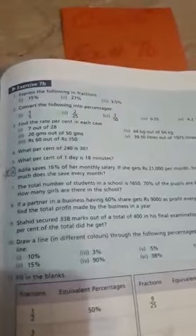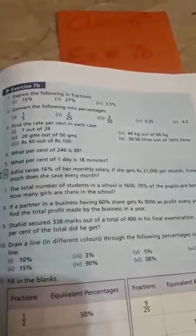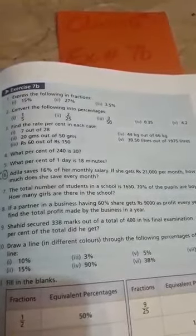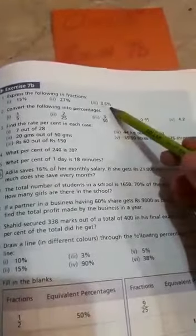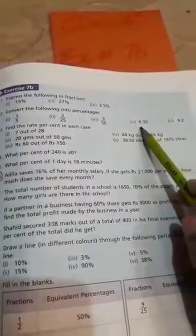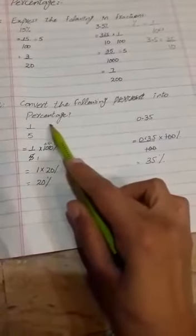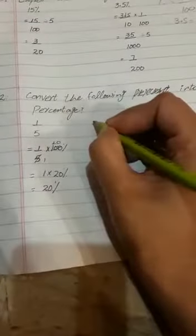Question number 2: Convert the following into percentage. Now see, you have given a fraction and you have to find the percentage. First part is 1 by 5. These two parts we have to do. First part 1 by 5, multiply by 100%. When you want to find percentage, multiply by 100%.